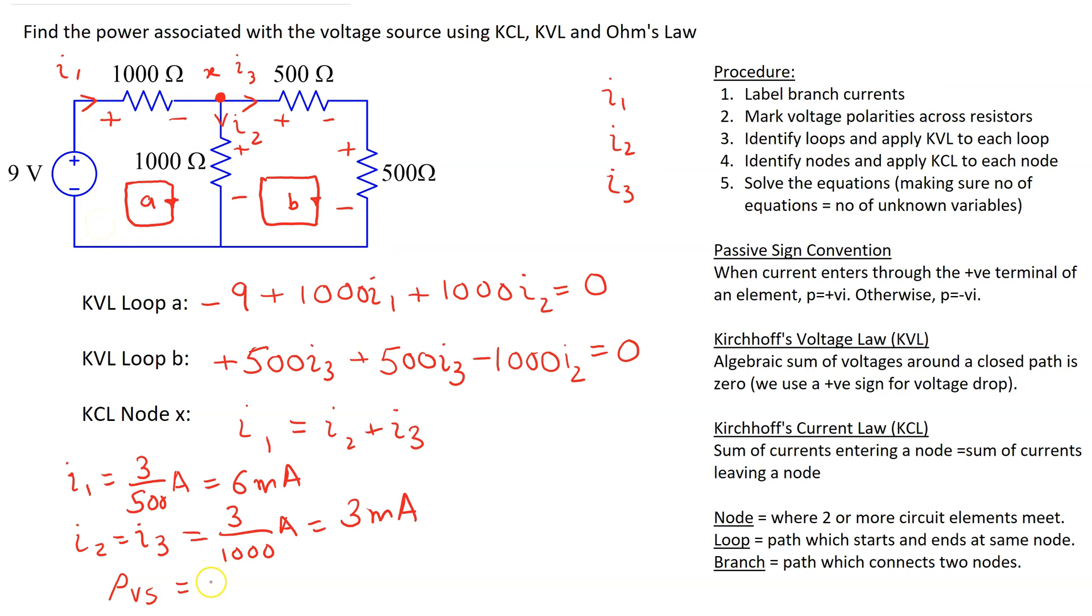Hence we write the power with a negative sign. So this is minus 9 times I1. And then substituting the value of I1 as 6 milliamp we obtain minus 54 milliwatt. So this shows that the independent voltage source is generating power in this circuit.